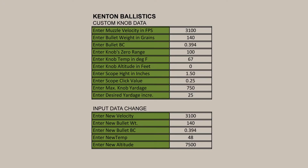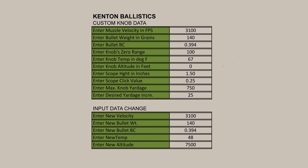In the upper left-hand corner, we will first enter the existing data from our custom knob. Below that is the input data change for our new field conditions. In this example, we are going to input a colder temperature and higher altitude. The custom knob was set for 67 degrees Fahrenheit at zero feet above sea level.